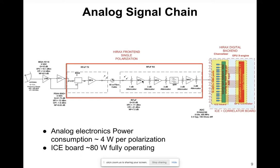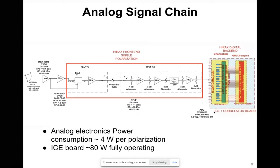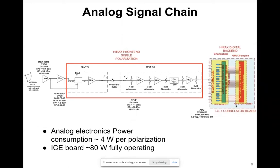On the RFoF fiber receiver side, a photodiode converts the optical signal back into an electrical signal, which is fed into our backend — an ICE board that performs digitalization, distribution, and channelization. We also have the GPU correlator that performs Fourier transform and beam formation. The analog electronics draw current for both polarizations since it is a dual-polarized system, and the ICE board consumes around 80 Watts in full operation.